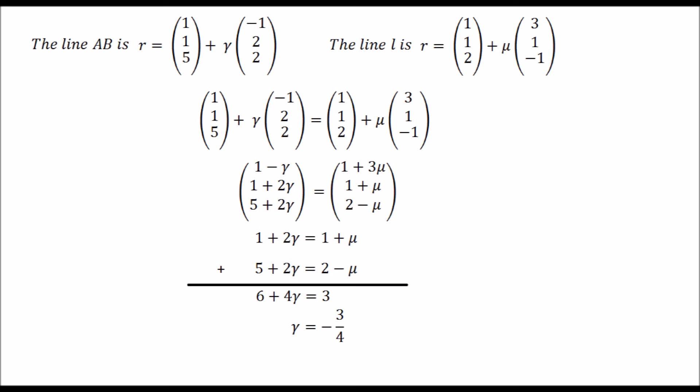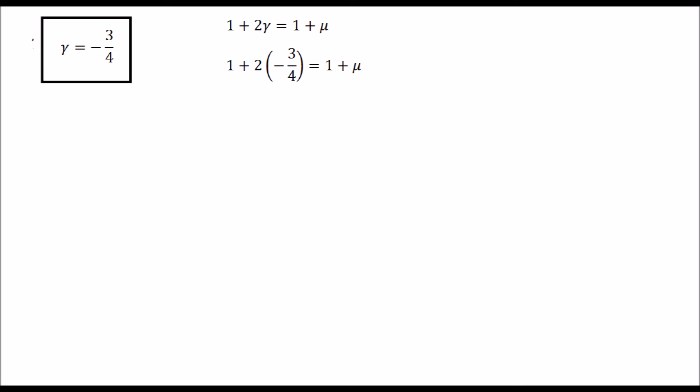Now let's substitute the value of gamma in equation second to find mu. So this is equation second, and I have substituted gamma equals minus three by four. And after simplifying this up, we get mu equals minus three by two.